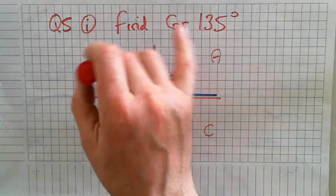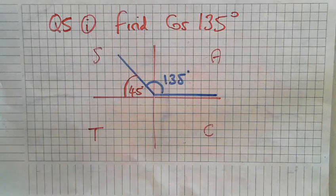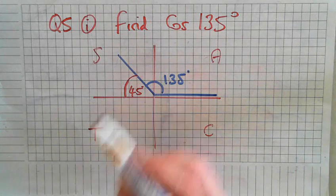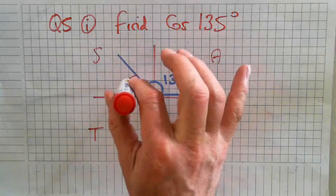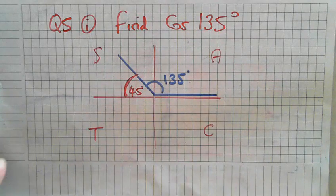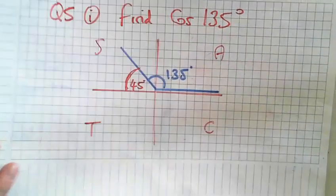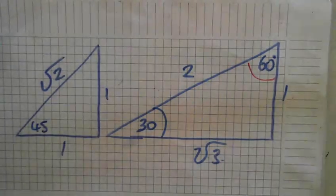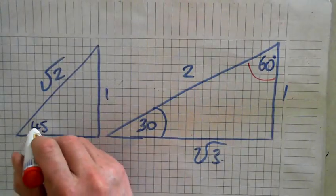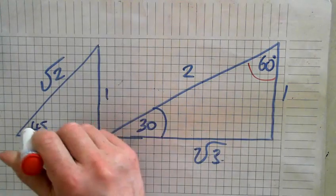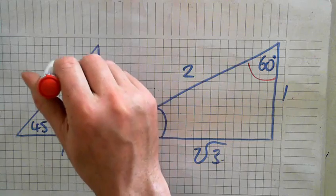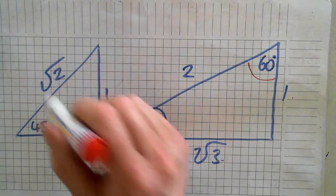Is cos positive or negative here? Cos is going to be negative. So we're going to get the cos of 45 degrees — how do you do that using your triangle? Cos of 45 is adjacent over hypotenuse: 1 over root 2.